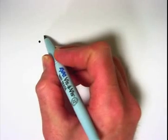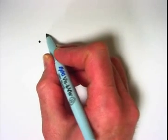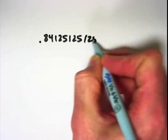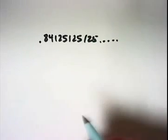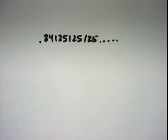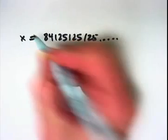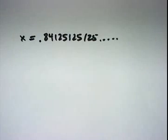I'm just going to make something up here. Let's say you have 0.84125125125, where the 125s are going on forever and ever. How could we convert that to a rational number? Well, let's call it x. And the goal is to figure out what x is, as a rational number, as a fraction, where the numerator and denominator are integers.